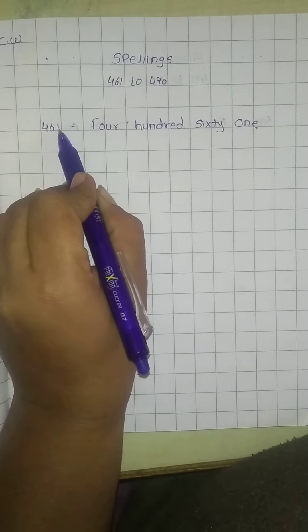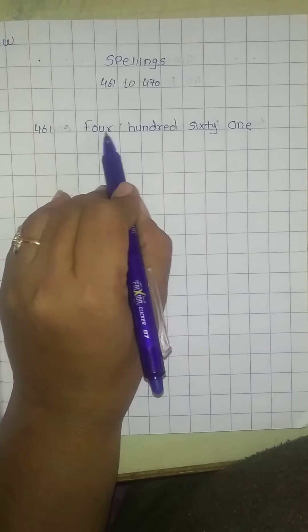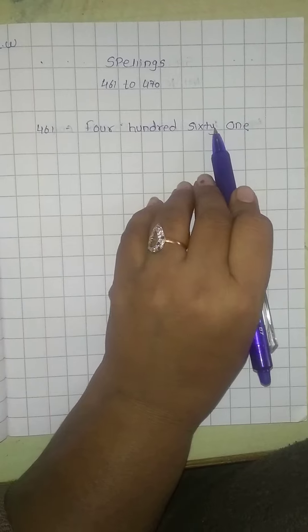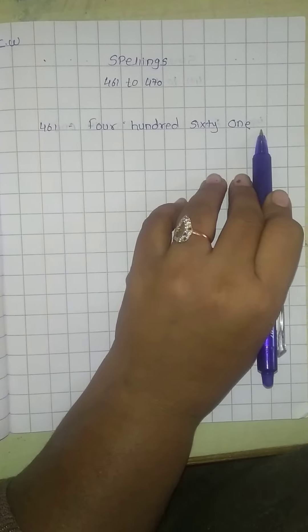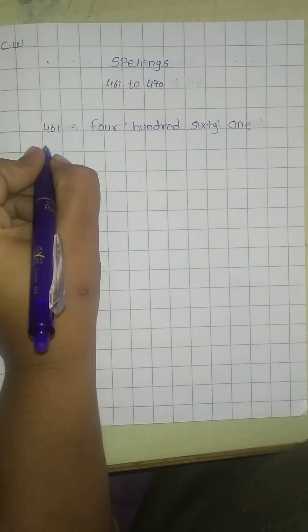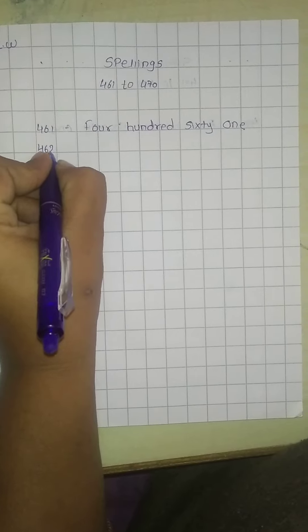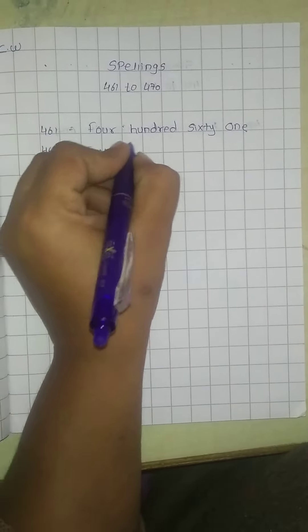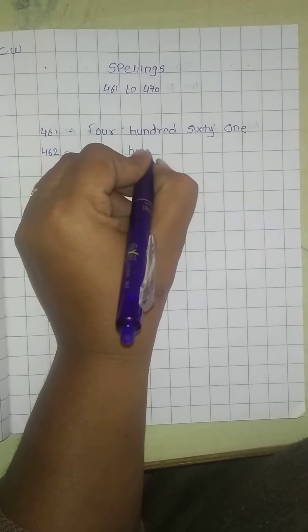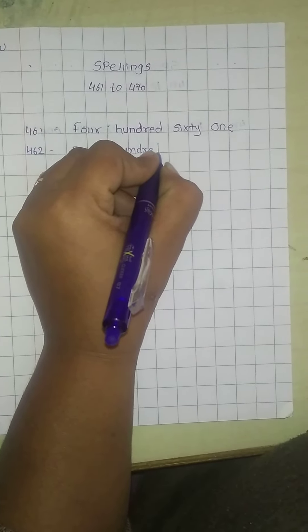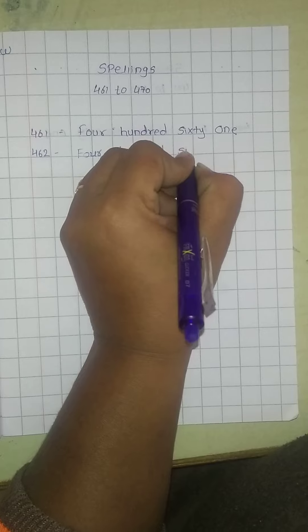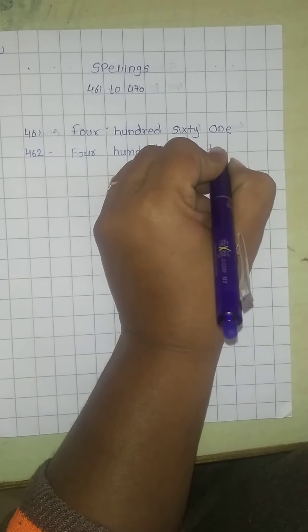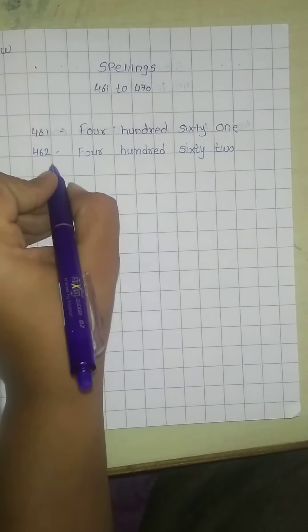Here 461, FOUR, HUNDRED, SIXTY, ONE. Now 461 after 462. We have to write here FOUR, HUNDRED, SIXTY, TWO. In this same way,